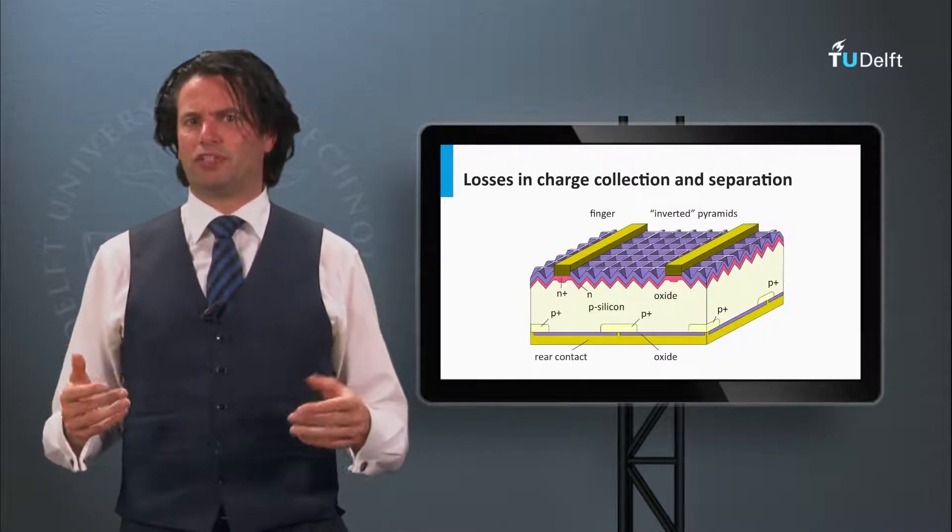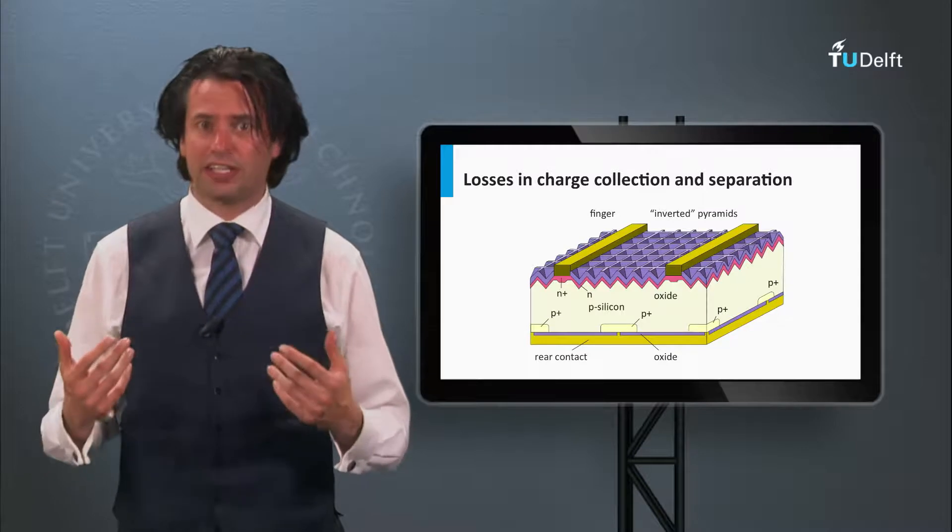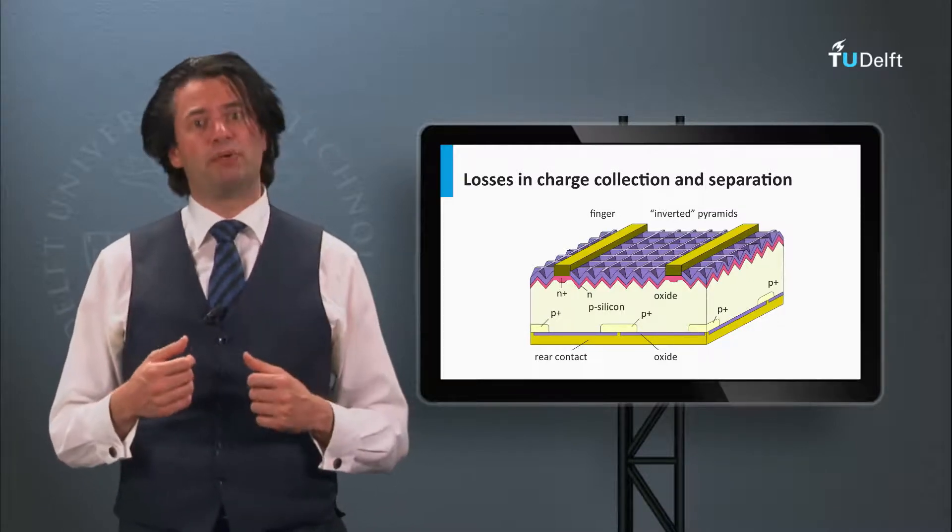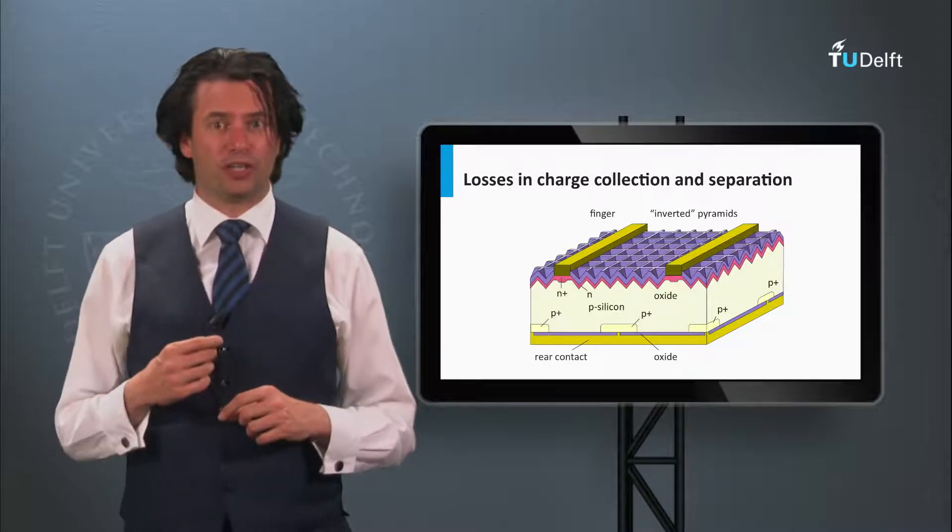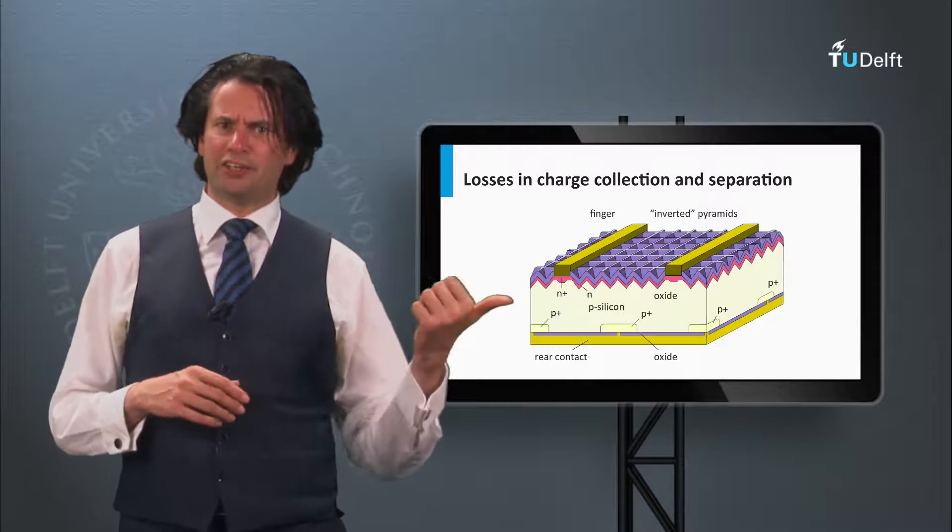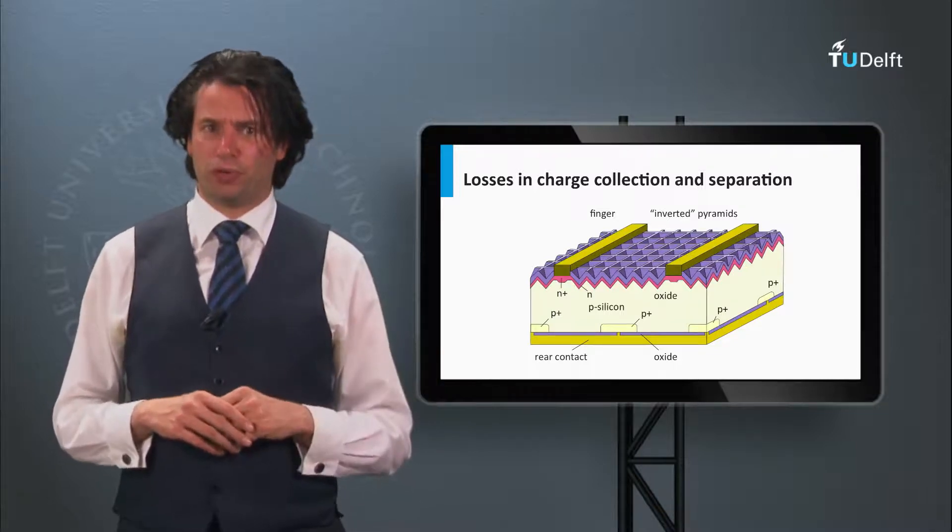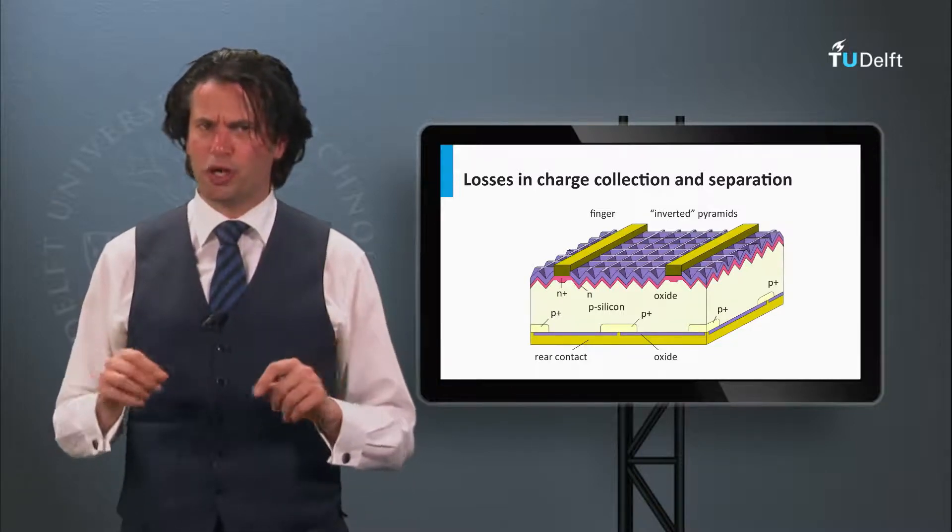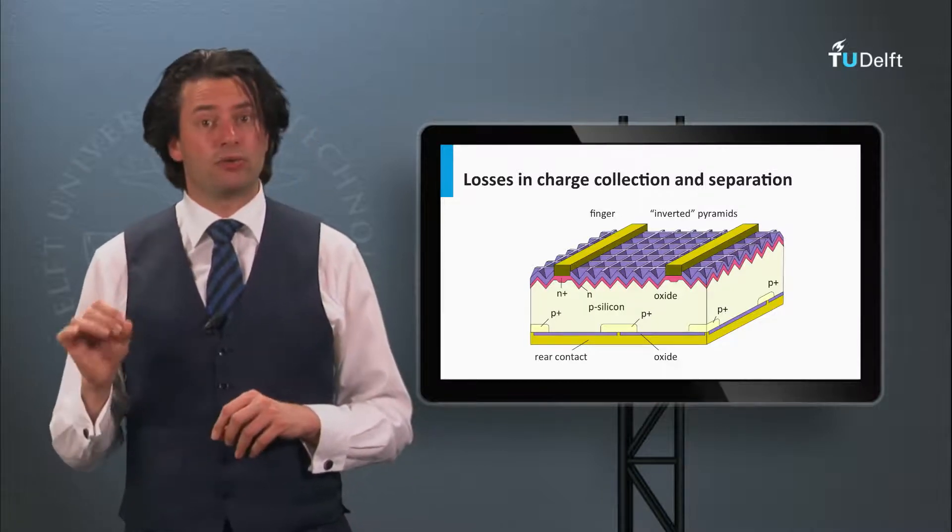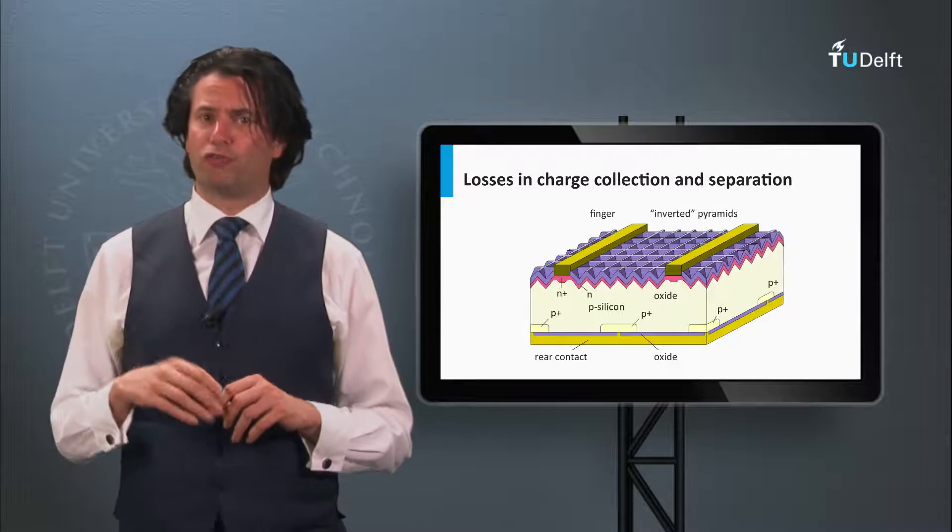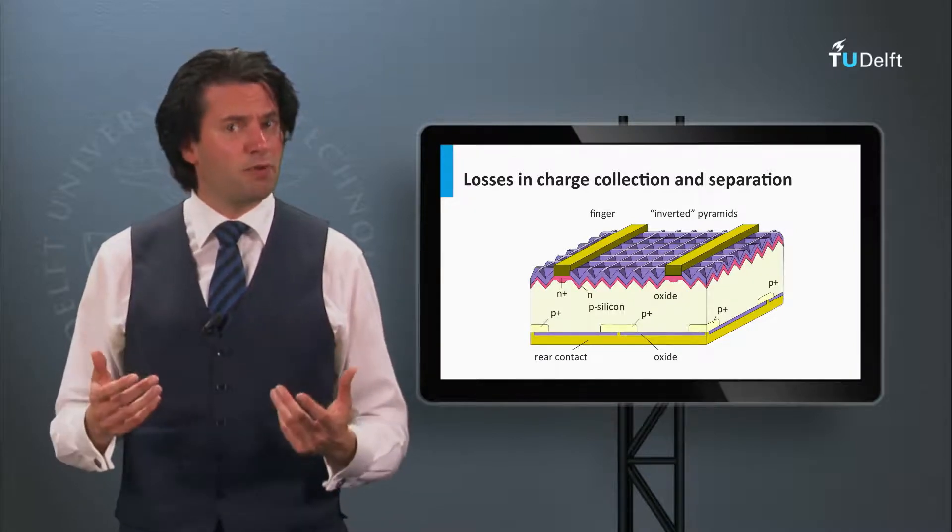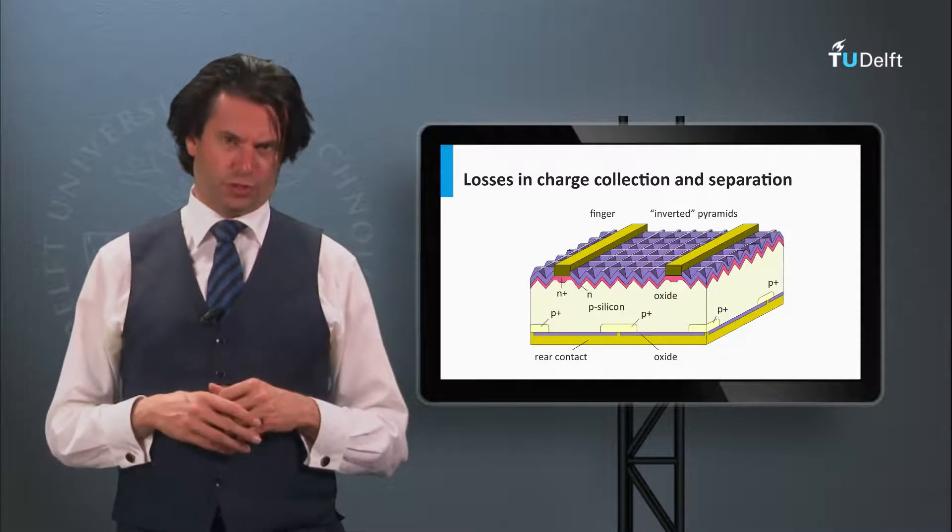Let's start with the first high efficiency crystalline silicon solar cell developed by Martin Green's group at the University of New South Wales in the late 80s and early 90s. Here you see an illustration of the PEARL concept, which uses a p-type float zone silicon wafers. This concept has approached a conversion efficiency of 25% and has been an example for various technologies developed afterwards.